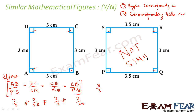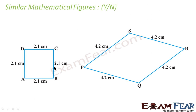Why are they not similar? Because the second condition failed. The second condition said that all the corresponding sides have to be proportional. And we found that the corresponding sides are not proportional, so in this case it is not similar. We will take one more example.